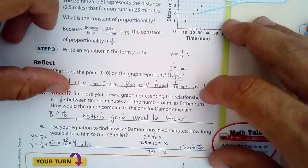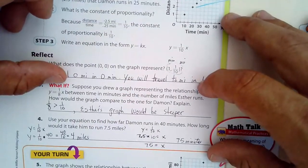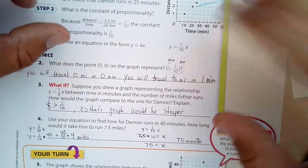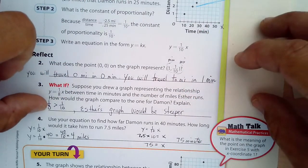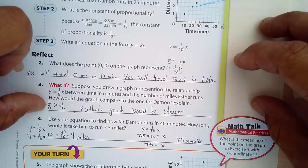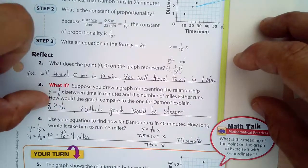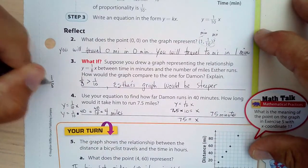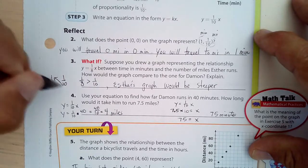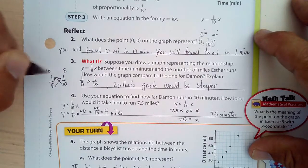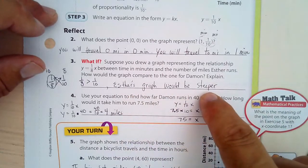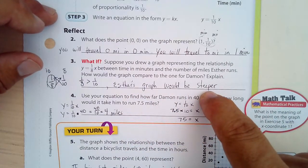Suppose you drew a graph representing the relationship y equals 1 eighth x between time in minutes and number of miles Esther runs. How could the graph be compared to Damon? Well, Esther, her rate of change is 1 eighth, and Damon's rate of change is 1 tenth. And 1 eighth is bigger than 1 tenth. You can cross multiply to compare. 10 times 1 is 10, 8 times 1 is 8. And since 10 is bigger than 8, 1 eighth is bigger than 1 tenth. So Esther's graph is going to be steeper because her rate of change, her k, is steeper.